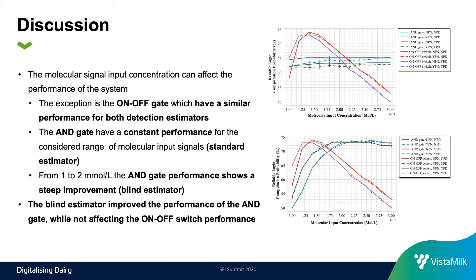The results show that, for the AND gate case, the concentration of the input signals can affect the reliability of the logical computation, especially for the blind detection estimator. This means the measurement procedure needs to be careful to ensure the highest performance of the system. It is interesting to note that the ON-OFF switch reliability is quite similar for both detector thresholds, and the AND gate achieves better than 70% reliability for the blind detection estimator when using input signal concentrations above 2 mmol per liter.